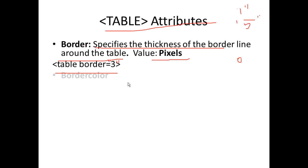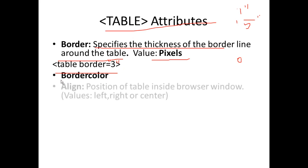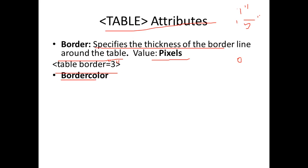The next attribute is border color. Border color is used to specify a particular color for the border of the table. We can call a border one particular color using the border color attribute.